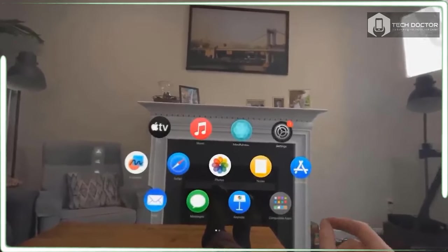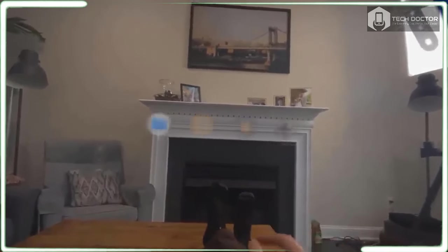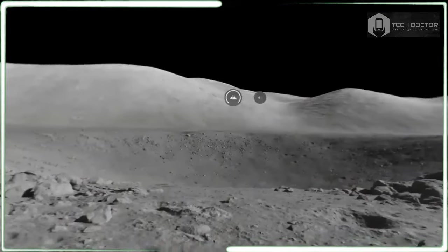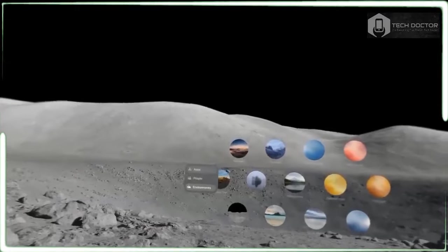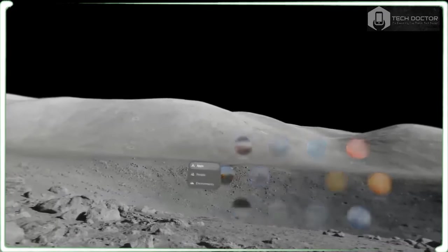One of the unique aspects to the Apple Vision Pro is your choice of multiple environments. Think of them as 3D desktops on steroids. There are several options available, ranging from Yosemite and Lake Lacollow to the Moon.